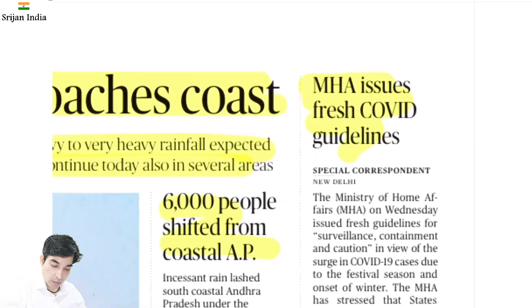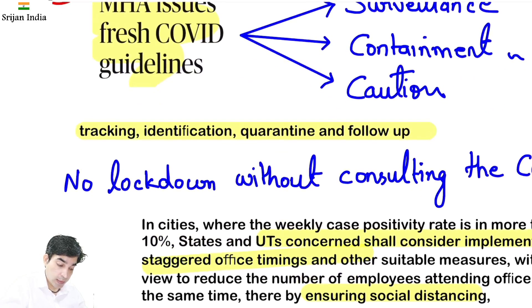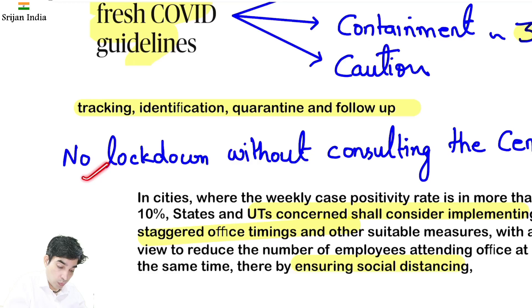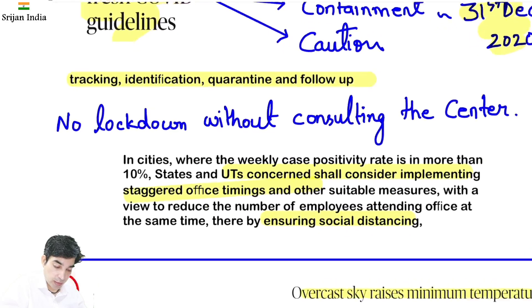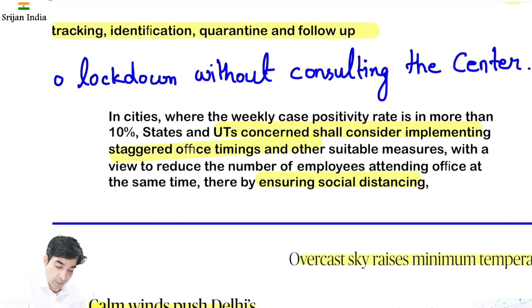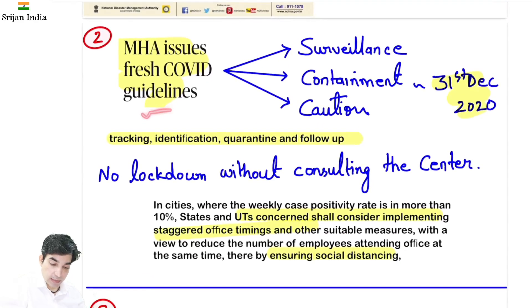Ministry of Home Affairs ne issue kiya fresh COVID guidelines — teen parameters par dhyan dena hai: surveillance, containment, aur caution. Ye guidelines active hongi 31st December 2020 tak. Tracking, identification, quarantine aur follow-up hoga. No lockdown without consulting the centre — lockdown bina consultation ke nahi hoga. Agar lockdown laga bhi toh woh hot spot areas mein hoga. In cities where weekly positivity rate is more than 10%, staggered office timings aur social distancing measures ho sakte hain.